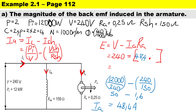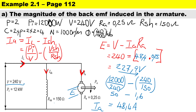Substituting I_a = 48.4 amps and R_a = 0.25 ohms into E = V − I_a × R_a gives us a generated EMF of 227.9 volts. Notice that for a motor the EMF is smaller than the terminal voltage. The EMF is generated by the armature assembly, while the terminal voltage ensures the machine can operate.